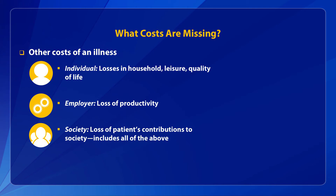To think about other costs that could be considered in a cost-of-illness analysis, we must examine the perspective of the analysis — that is, who is the audience and how will they use the results. From the perspective of the health care system, costs from the medical expenditure panel survey may be enough. But including the individual perspective means adding loss in household productivity and leisure. From an employer's perspective, it's important to include productivity losses not only for days missed from work, but also days at work when the person might not be fully productive. From a societal perspective, all these costs should be included.